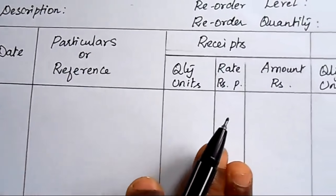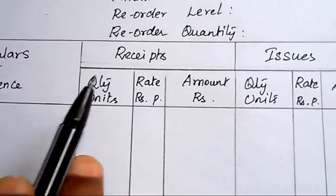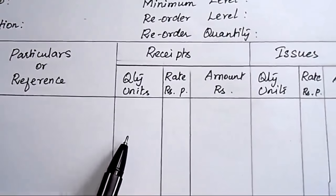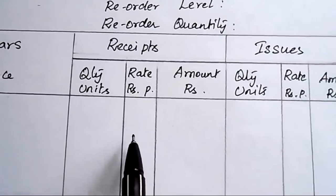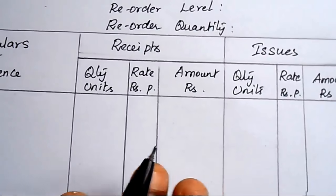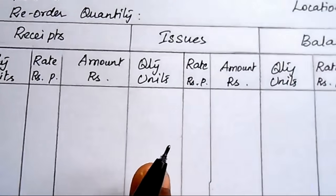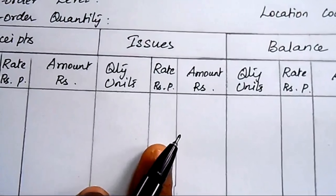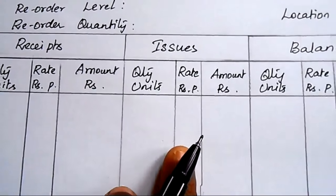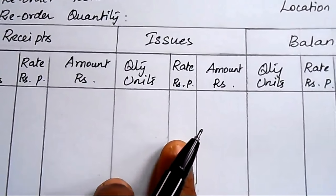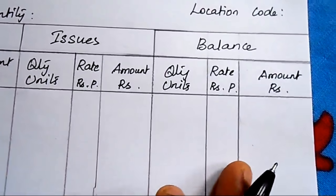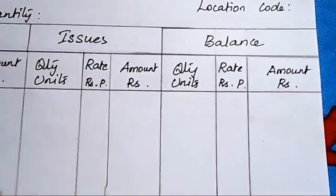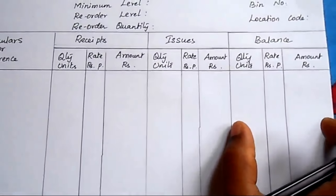After the date and particulars columns, there are three separate sections: receipt, issue, and balance. In the receipt column, record the quantity, rate per unit, and amount when material is purchased. In the issue column, record the units issued, rate per unit based on FIFO or LIFO, and amount. After each transaction, calculate the balancing figure to find how many units remain in hand.